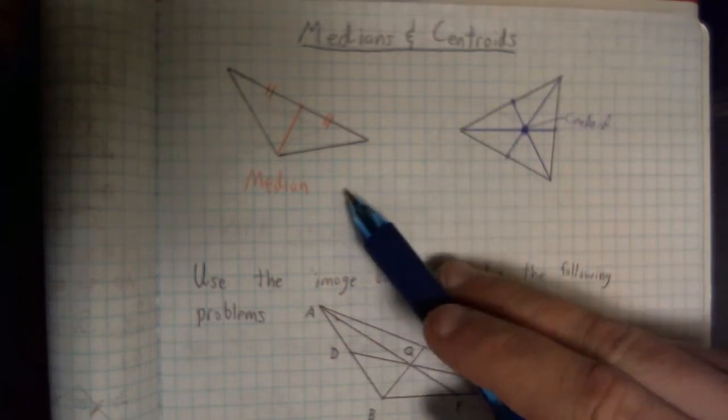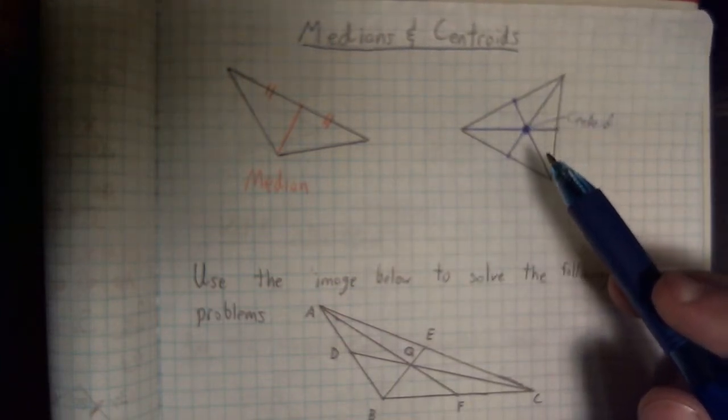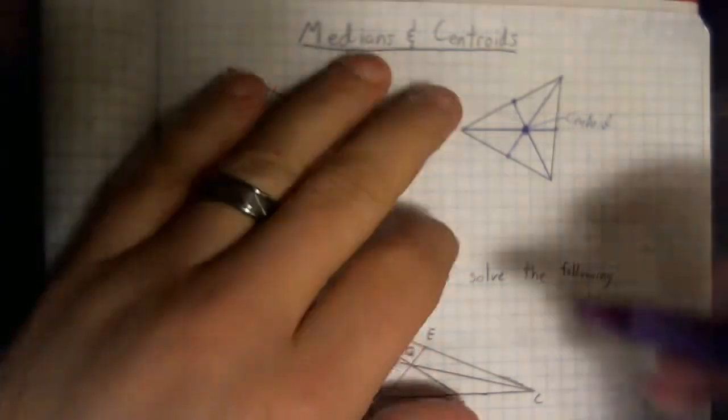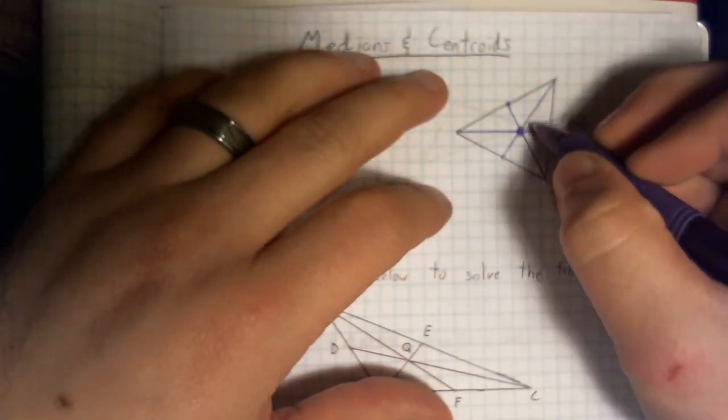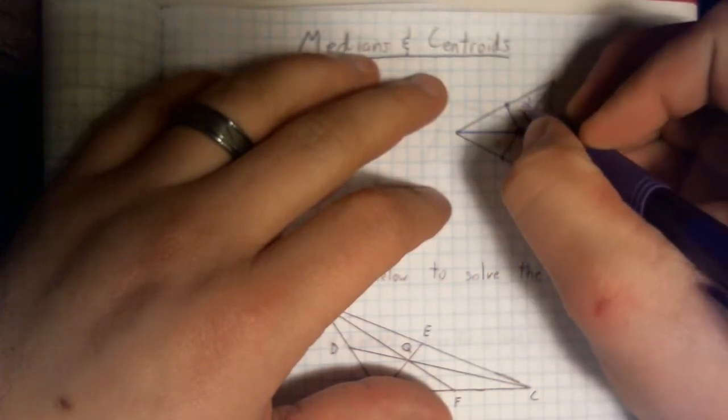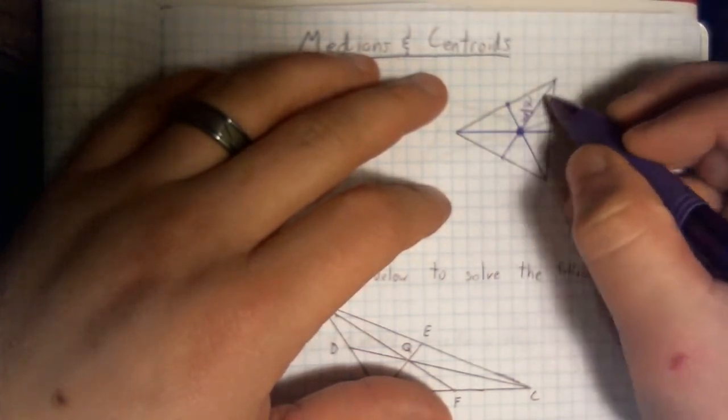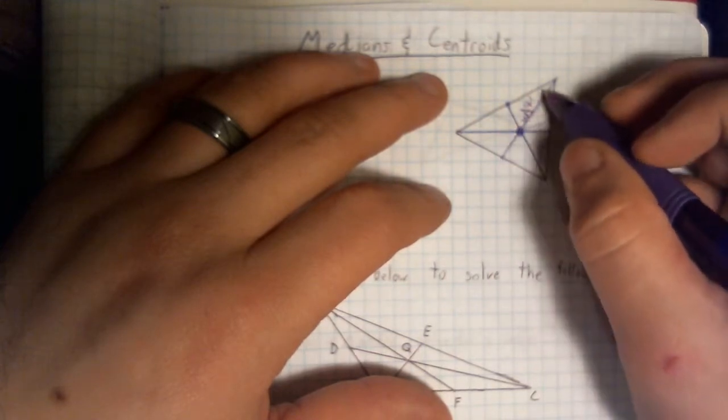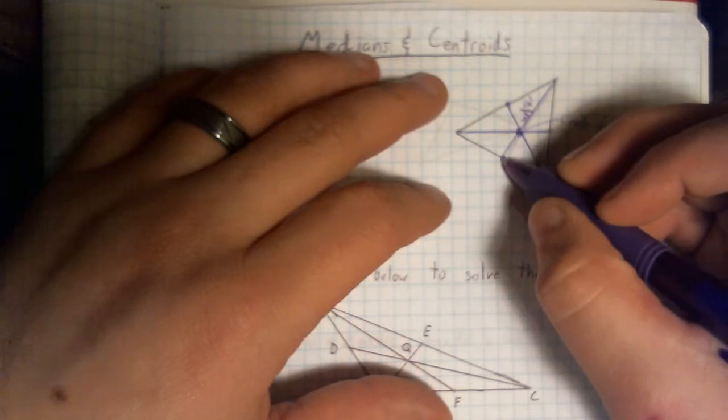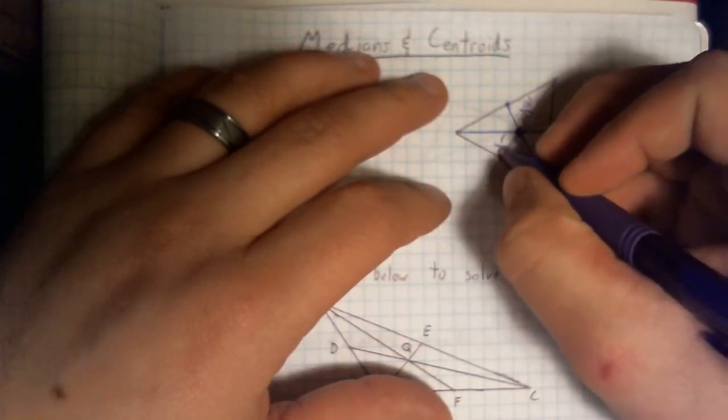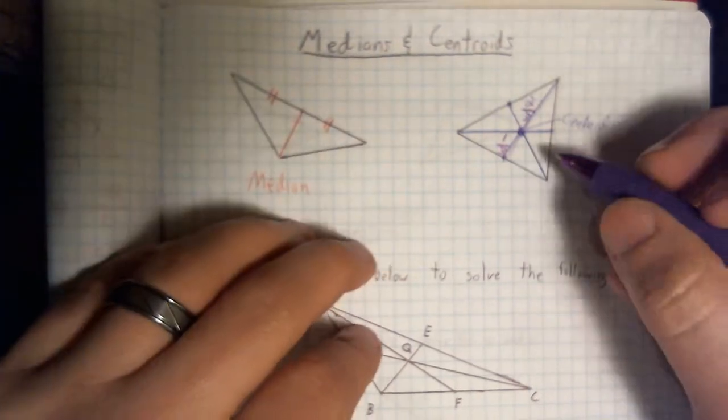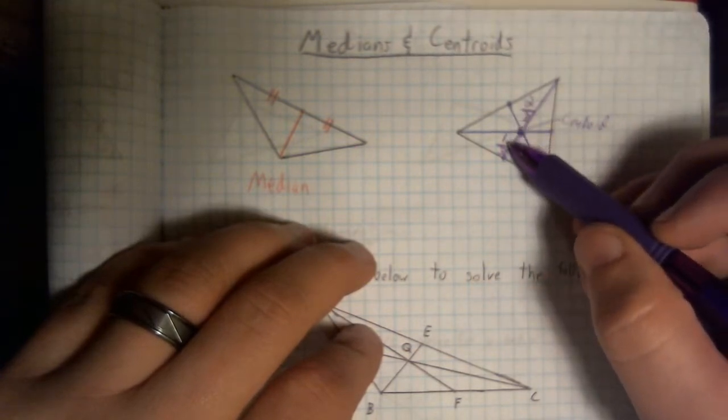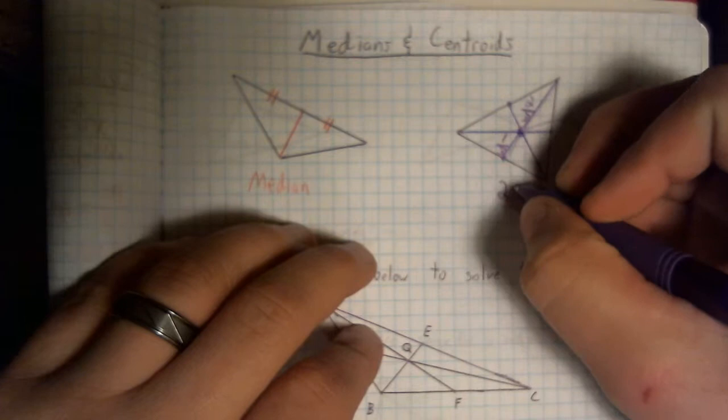Alright, so we have our medians and our centroid. Now, there are some pretty important things that we can recognize with a centroid. And this is one of them. The distance from the vertex to the centroid is two-thirds the distance of the entire segment. That means if I start from here and I travel along this one segment, I'm going to travel two-thirds the distance to get to this point. Which means that there's only one-third remaining to make up the whole segment. Well, that's significant because this piece right here is twice the size of this smaller piece. There's a two-to-one ratio.